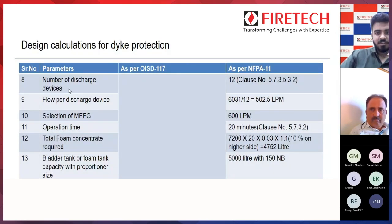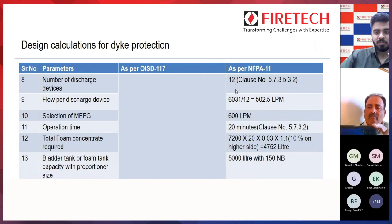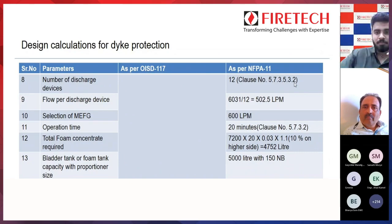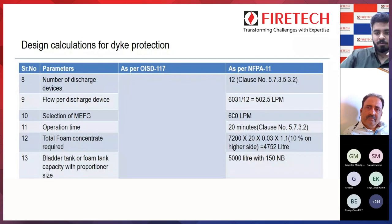As per NFPA 11 clause 5.7.3.5.3.2, the number of discharge devices required is 12. Flow per discharge device = 6031 / 12 = 502.5 lpm. Since 502.5 lpm is not a standard MEFG size, we select 600 lpm per manufacturer standards. Operation time per clause 5.7.3.2 is 20 minutes.